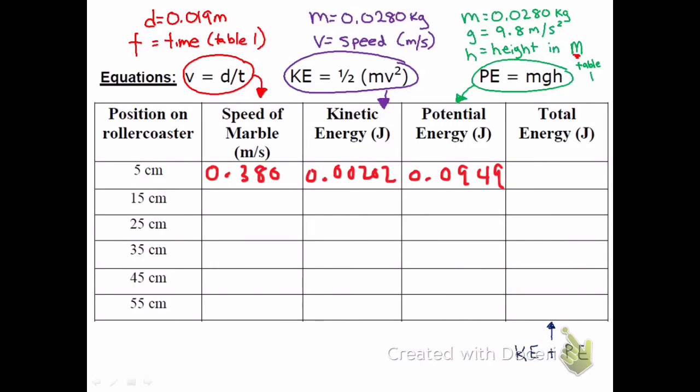All right, so there's the three numbers we calculated. The last thing we need to do is calculate the total energy, which is simply adding up the kinetic and the potential. So you're going to take 0.00202, add it to 0.0949, and that comes out to 0.0969.